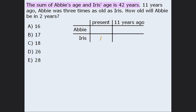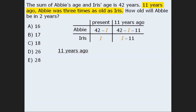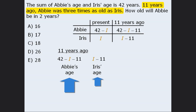If I equals Iris' age and the sum of their ages is 42, then Abby's present age must be 42 minus I. To find Abby's age 11 years ago, we take 42 minus I and subtract 11. To find Iris' age 11 years ago, we take I and subtract 11. Now let's create an equation using the information about their ages 11 years ago. The question tells us that Abby's age was three times Iris' age. So if we take Iris' age, the smaller value, and multiply it by three, the two values will be equal and we have an equation.